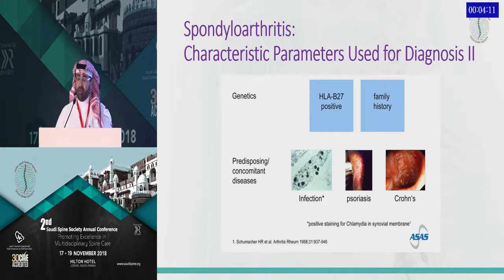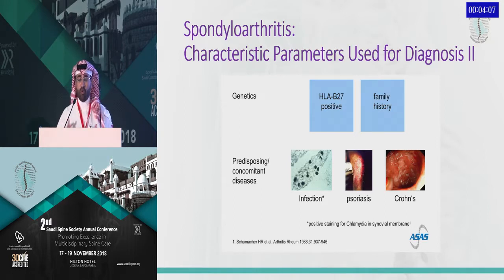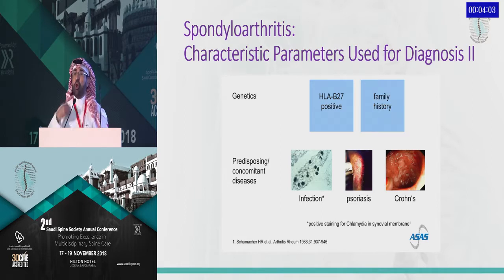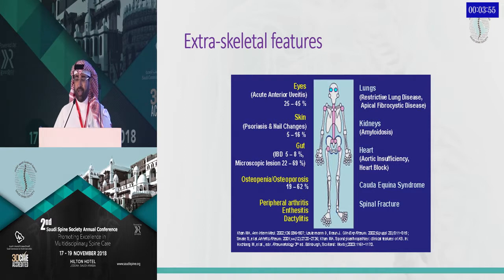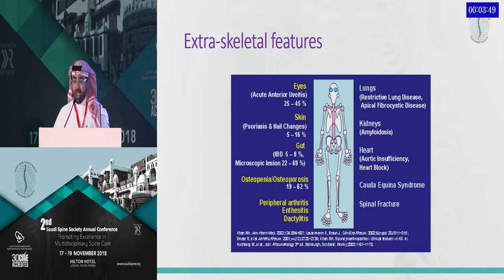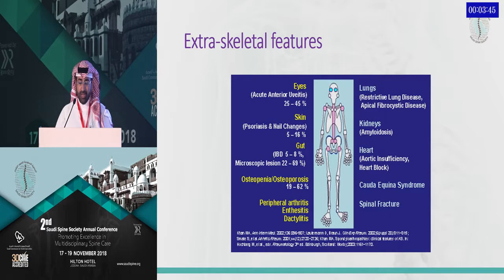Regarding genetics, HLA-B27 positivity is seen in these patients. There are also predisposing concomitant diseases such as psoriasis, Crohn's disease, or preceding infections like gastroenteritis or urethritis that can precede the development of spondyloarthritis. Extra-articular manifestations include uveitis involving the eye, psoriasis of the skin, osteoporosis and osteopenia, and peripheral arthritis, among others.